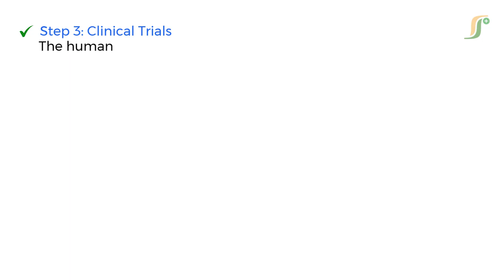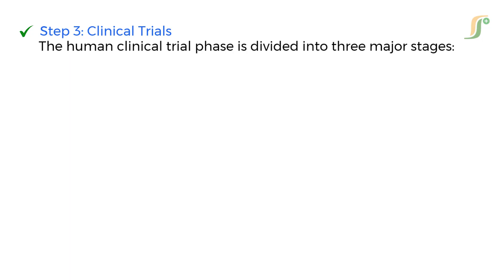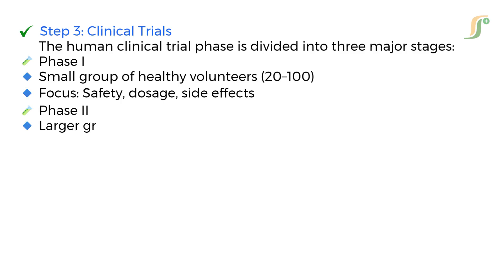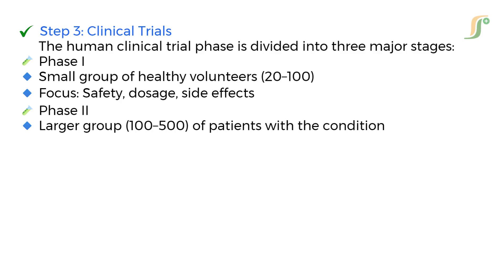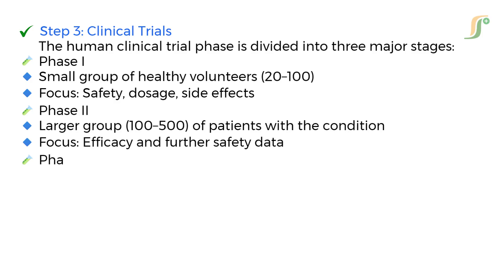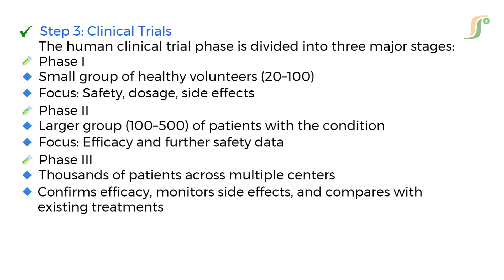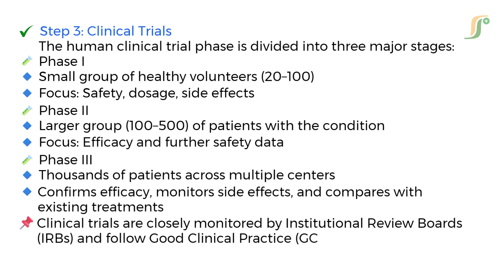Step 3: Clinical Trials. The human clinical trial phase is divided into three major stages. Phase 1 is conducted on a small group of healthy volunteers, generally 20 to 100 people, and focuses on safety, dosage, and side effects. Phase 2 is conducted on a larger group, generally 100 to 500 patients with the condition, and focuses on efficacy and further safety data. Phase 3 is conducted on thousands of patients across multiple centers — it confirms efficacy, monitors side effects, and compares with existing treatments. Clinical trials are closely monitored by Institutional Review Boards (IRB) and follow Good Clinical Practice (GCP) guidelines.